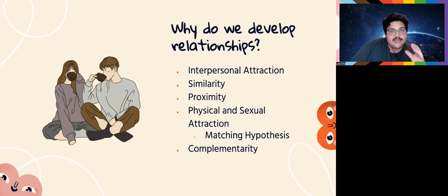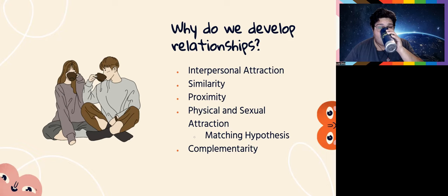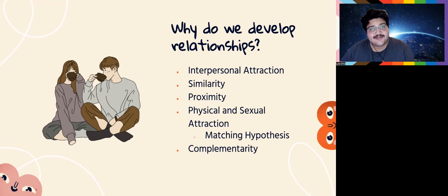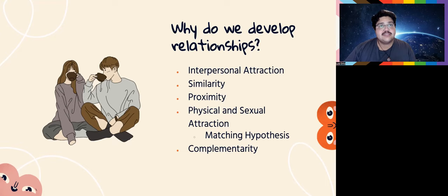Finally, there's complementarity — we get into relationships because the other person complements us. You probably wouldn't want someone exactly like you; you'd want somebody who complements you. Think of a disorganized person versus an organized person, or a messy person versus a clean person. These traits complement one another, and each person tends to balance the other's habits over time.